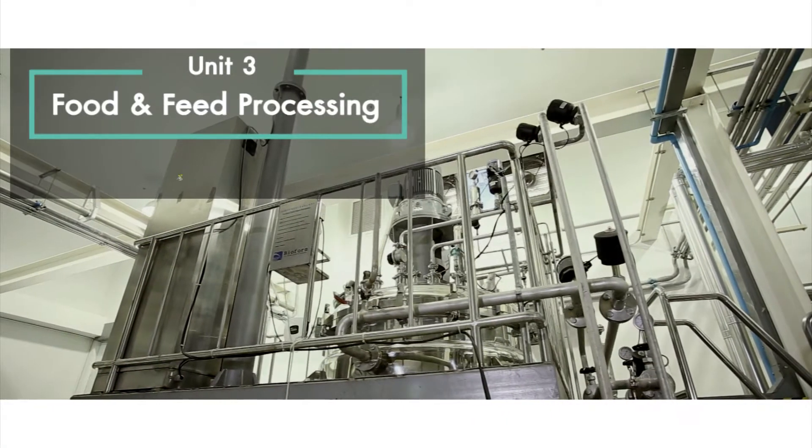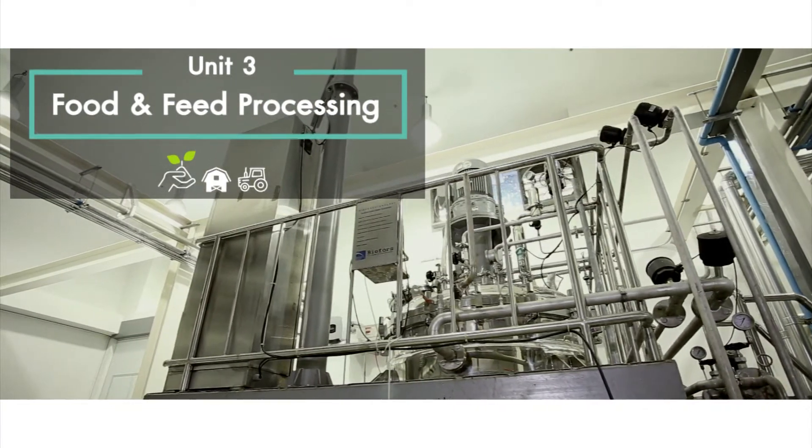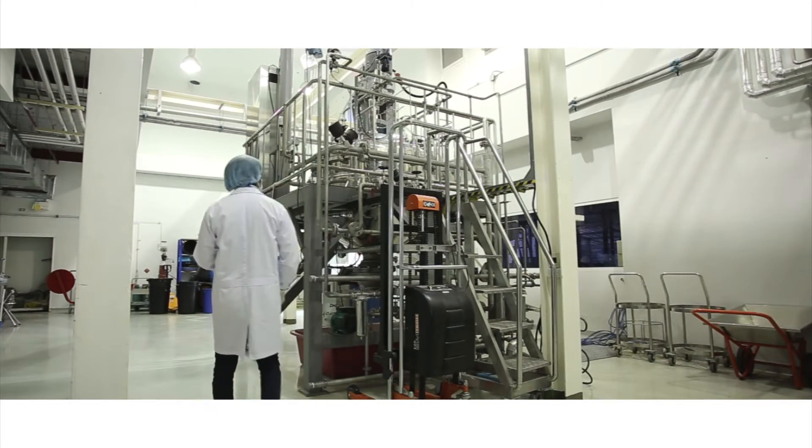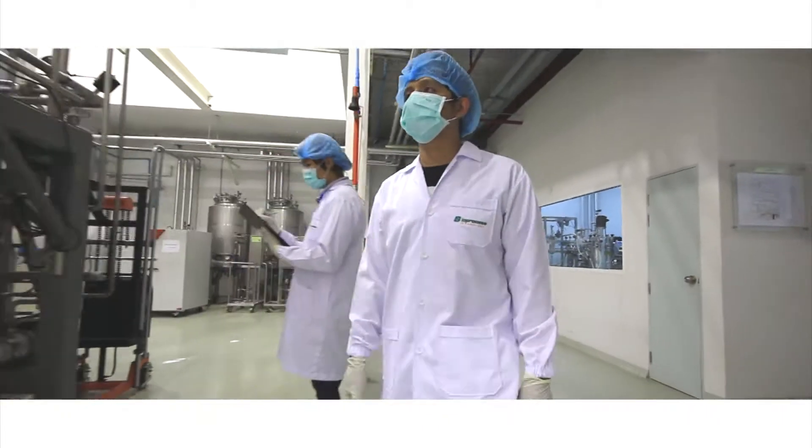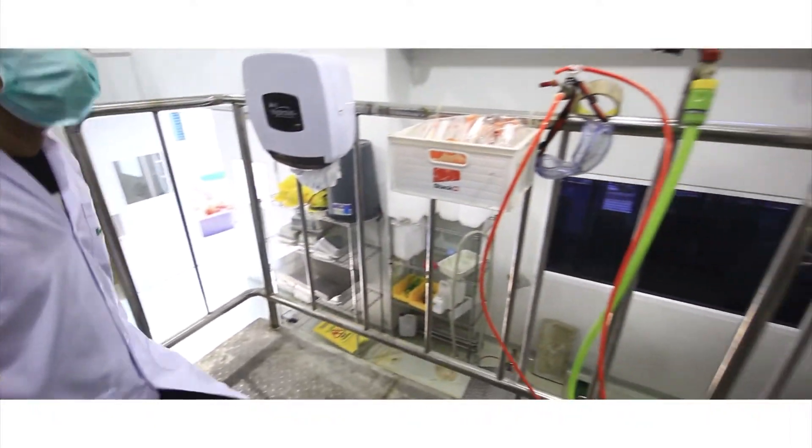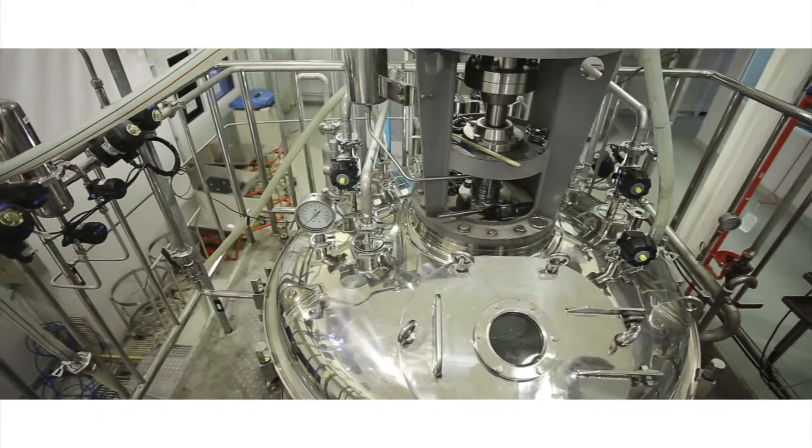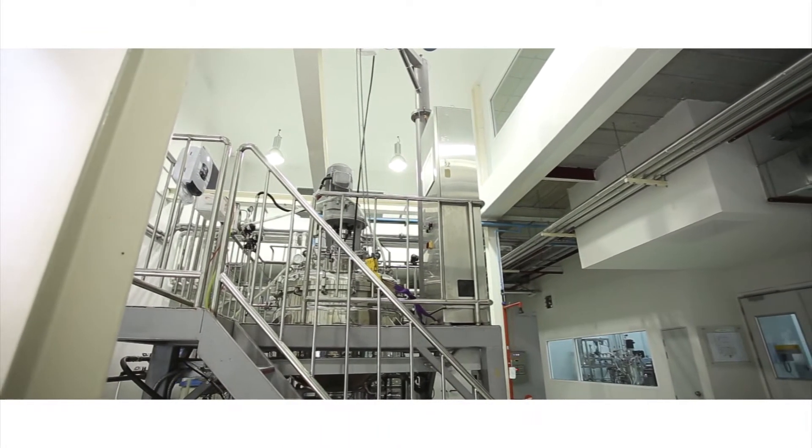Unit 3: Food and Feed Processing. This unit serves to scale-up research activities for food and feed processing by solid-state fermentation and downstream processing, such as drying, product formulation and analysis, as well as assessment of product storage and shelf life.